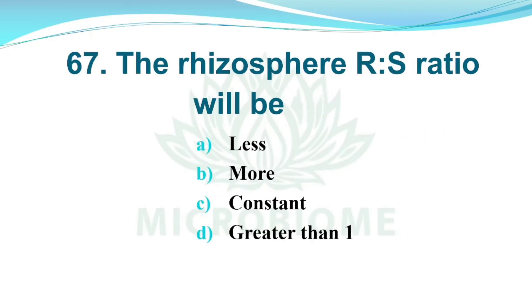And next, in the rhizosphere the R:S ratio will be. Options: A) Less, B) More, C) Constant, D) Greater than 1. The right answer is Option D, Greater than 1.